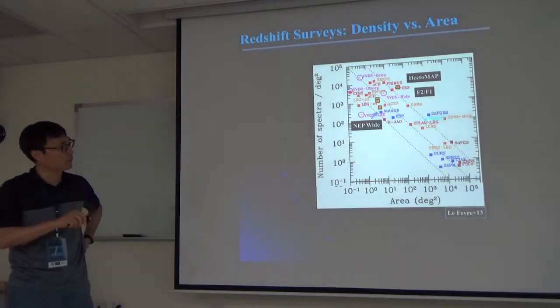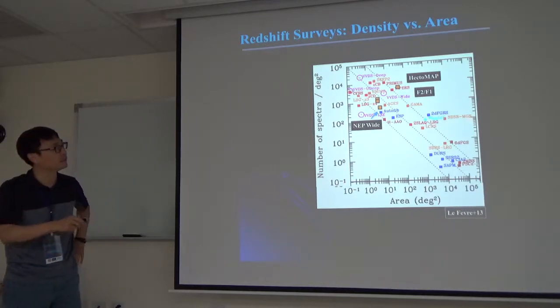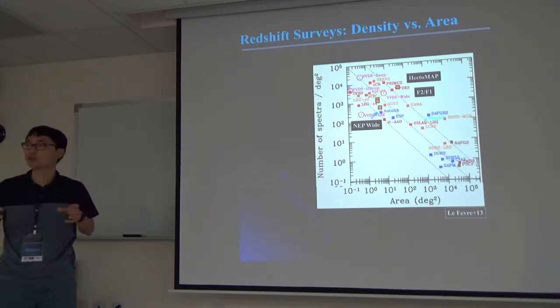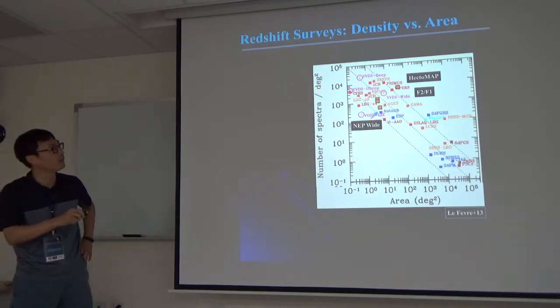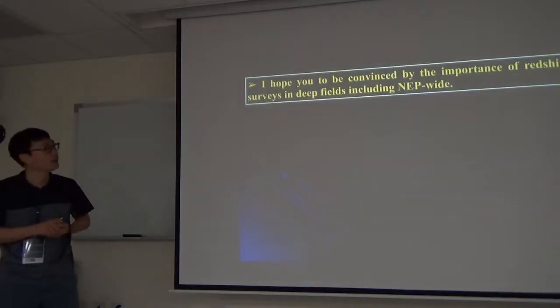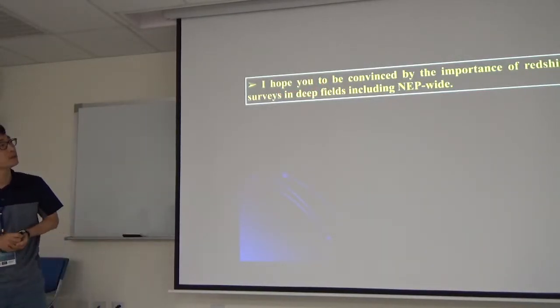You can study how emission line properties or optical line properties change as a function of infrared luminosity or as a function of redshift. This can be a unique combination between optical spectra and infrared data. Now if you make a plot, there are many redshift surveys in the world. Y-axis is the number of spectra per square degree, the number density, how dense the redshift survey is, as a function of area of the survey. HectoMAP and FAST FAIR2, these are the surveys I talked about. And NEP, if you just use the current redshift data that we have, this will go here, meaning that for a given area the number density of spectra is quite low compared to other surveys. I hope you to be convinced by the importance of redshift surveys in deep fields including NEP.